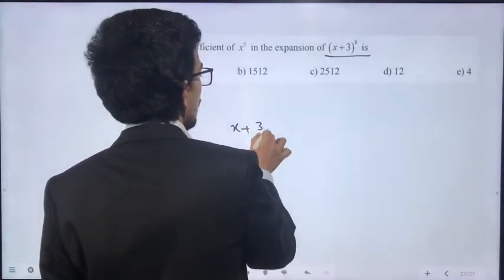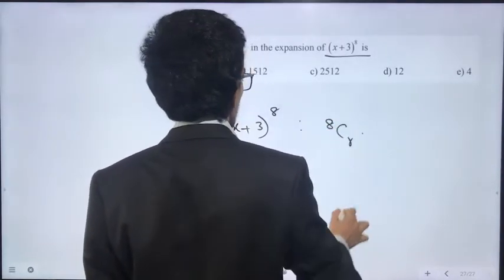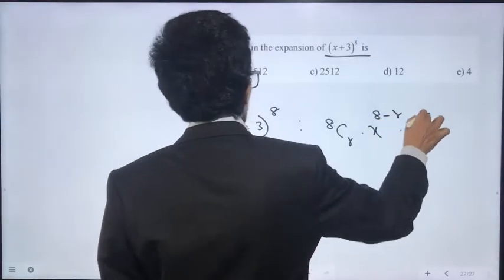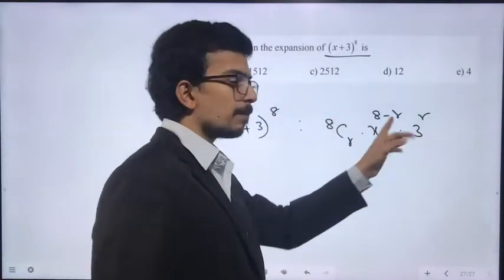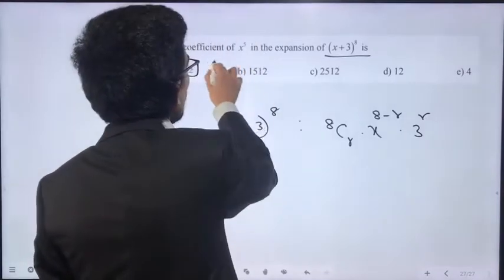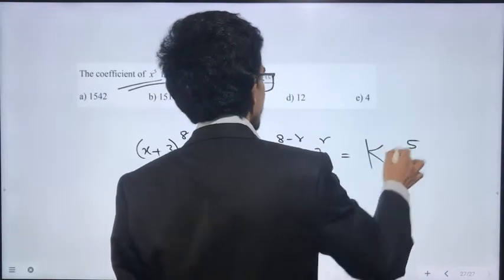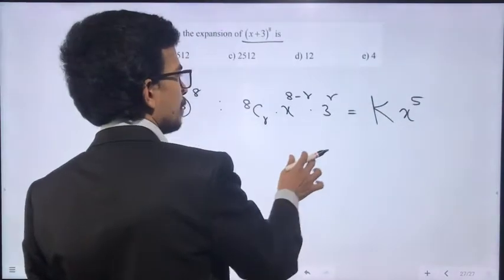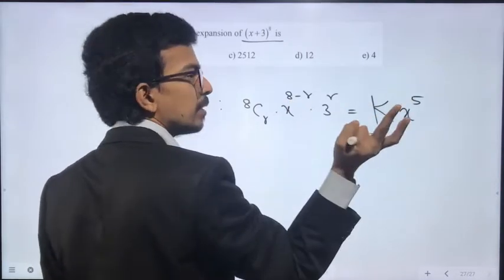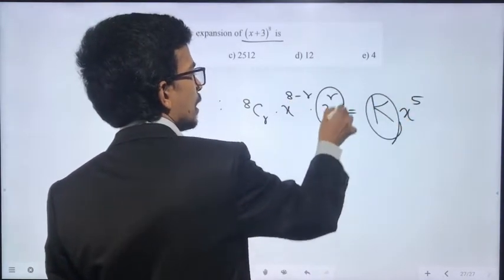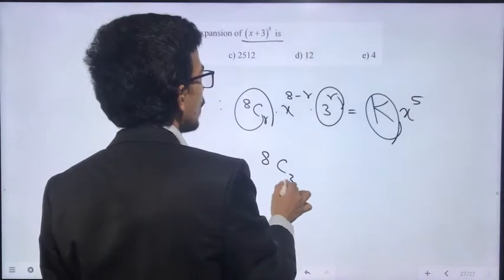(x + 3)^8. The general term is 8Cr × x^(8-r) × 3^r. For the coefficient of x^5, we compare the powers: 8 - r = 5, so r = 3. This gives 8C3 × 3^3.